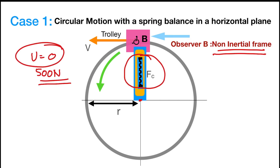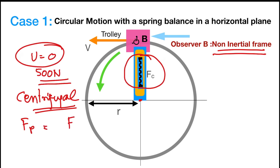So observer B must assume another force that balances this centripetal force to keep the trolley at rest — he assumes a pseudo force. In this case, that pseudo force is known as centrifugal force. This pseudo force should be equal in magnitude and opposite in direction to the centripetal force: Fp equals Fc, but directed outward. Centripetal force acts towards the center, so centrifugal force acts in the outward direction. This is how observer B explains the situation using Newton's laws, by assuming a pseudo force — the centrifugal force.